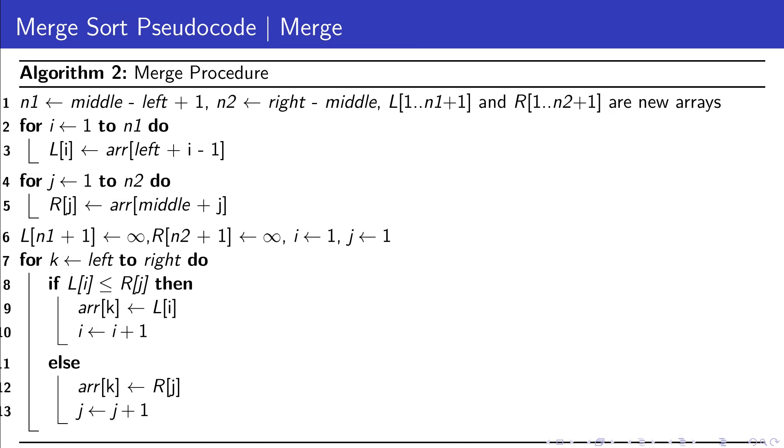Next, we make two new lists, L for the first list's items and R for the second's. At the end of both L and R, we add a special value called infinity as a marker.